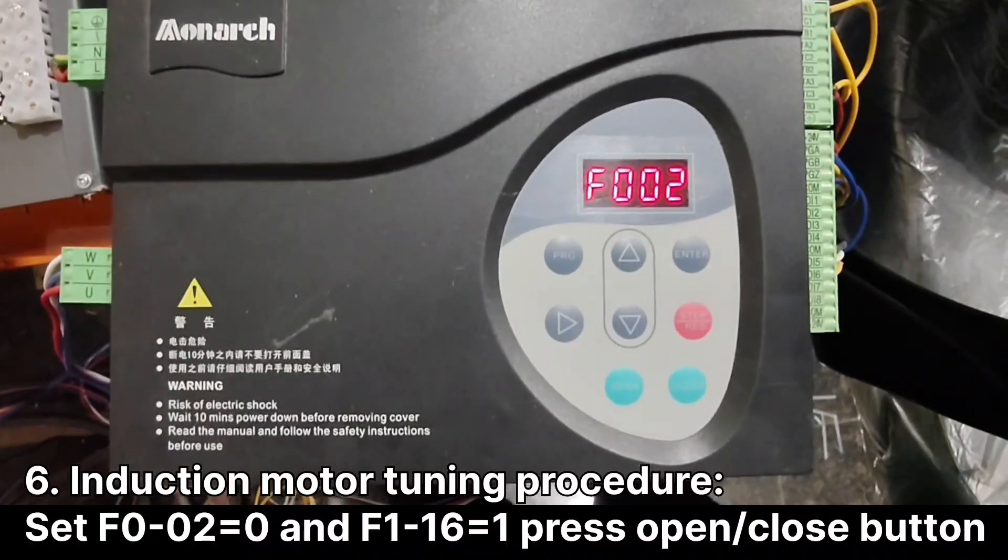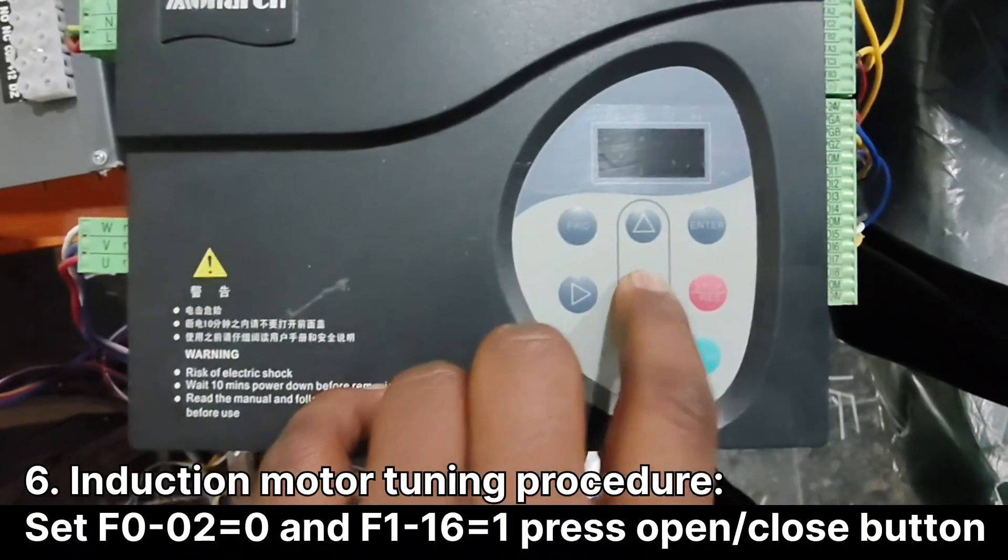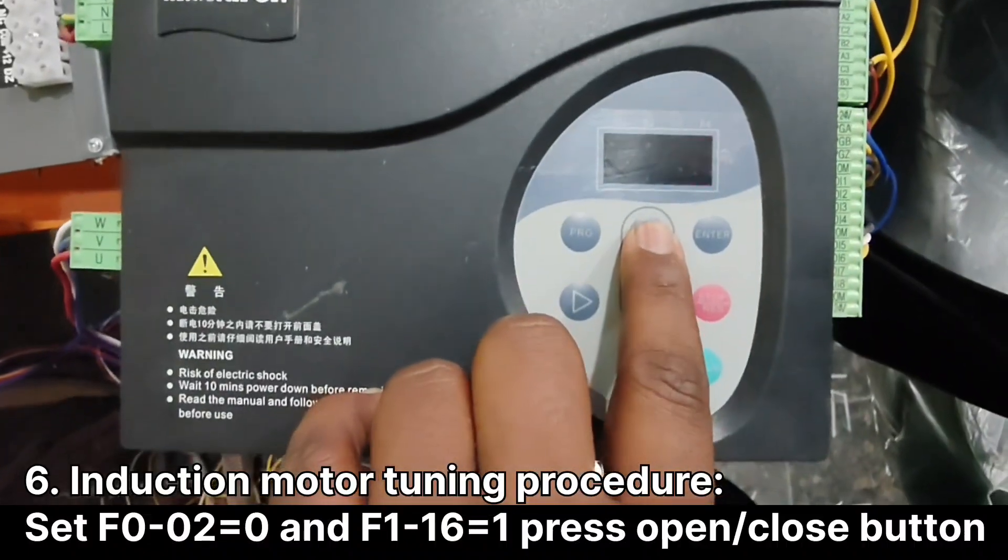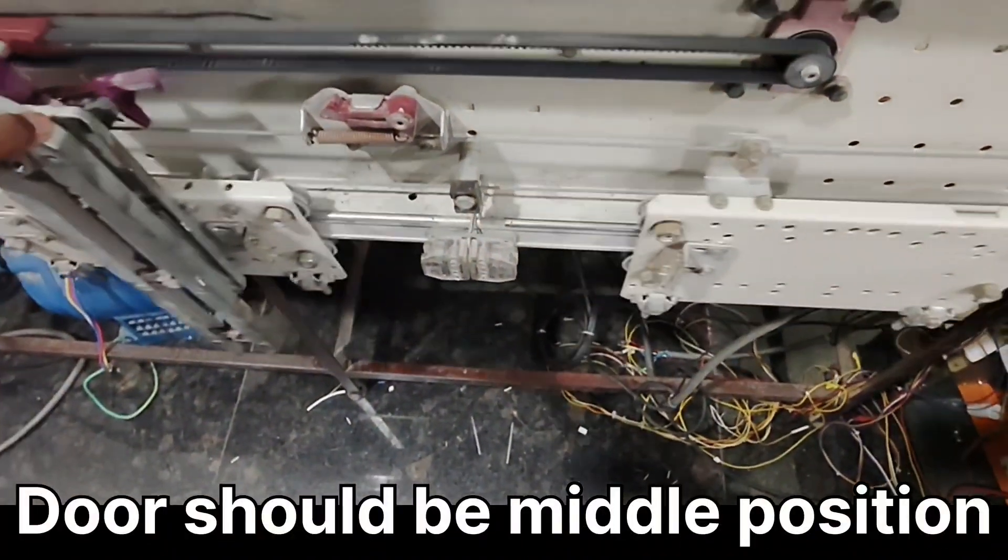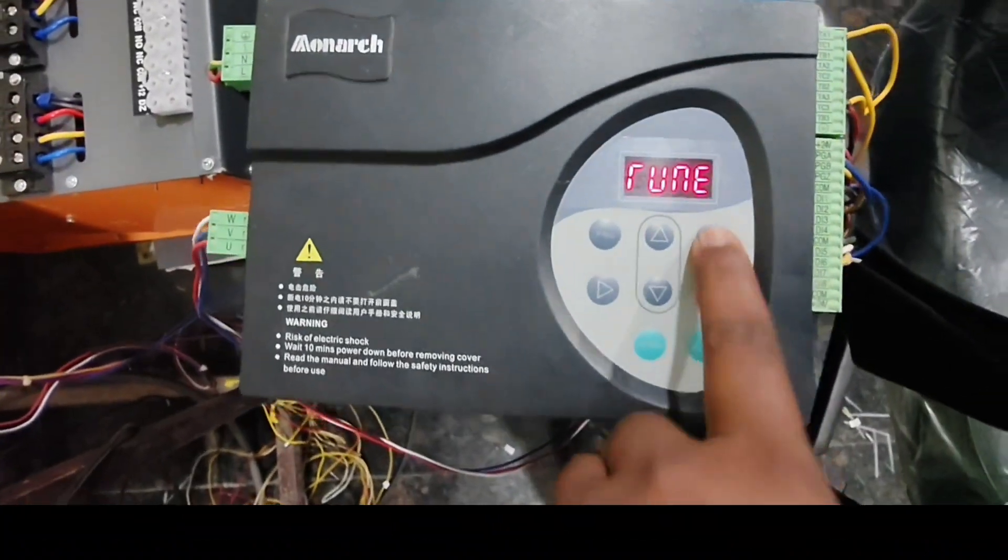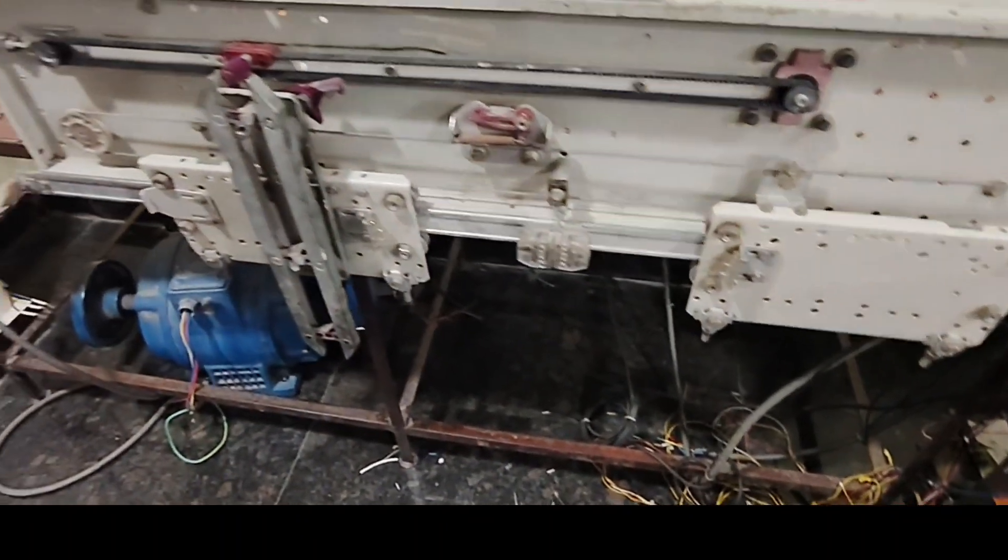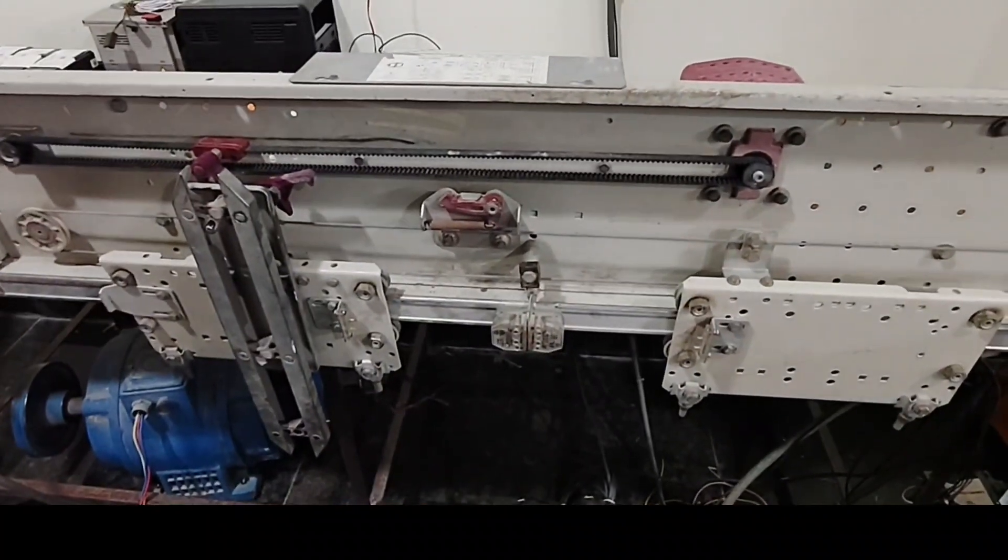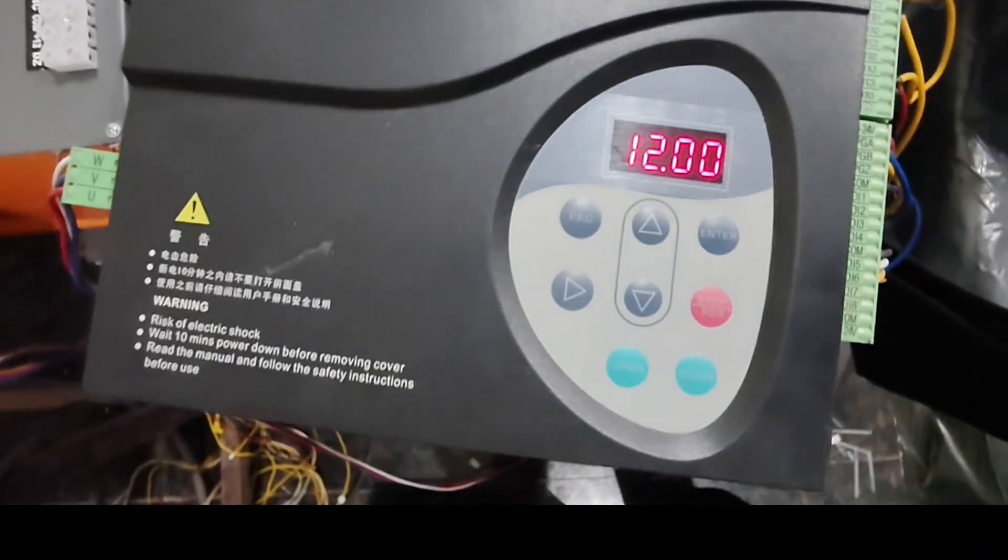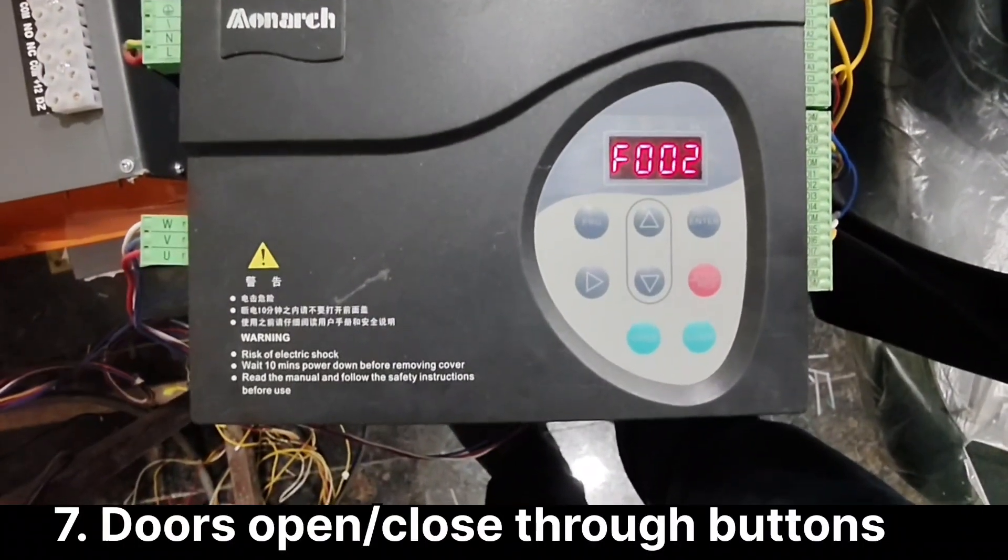For induction motor tuning, set F002 to 1. Before this, door needs to be positioned between open and close. Give enter, then press open and close button. Motor will tune automatically. After this, for manual operation, use open and close button.